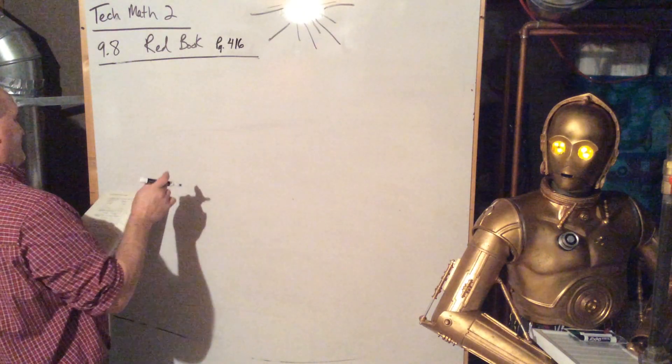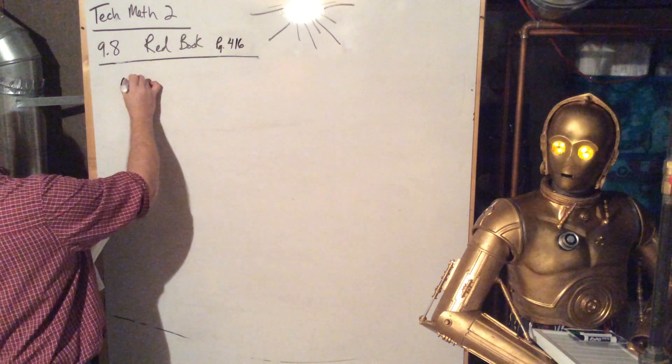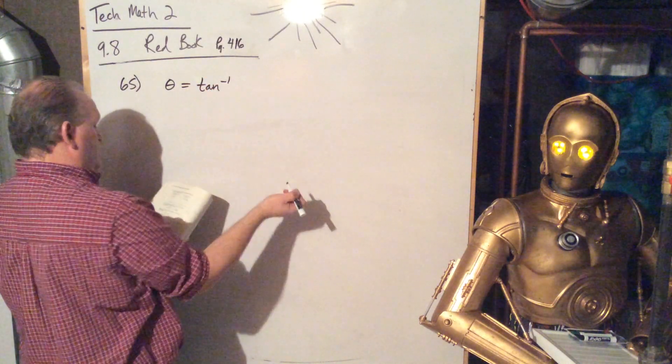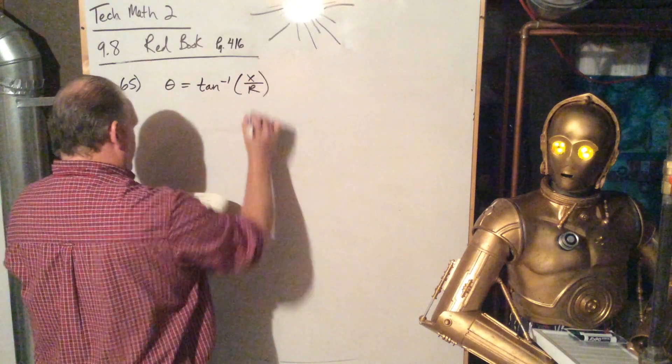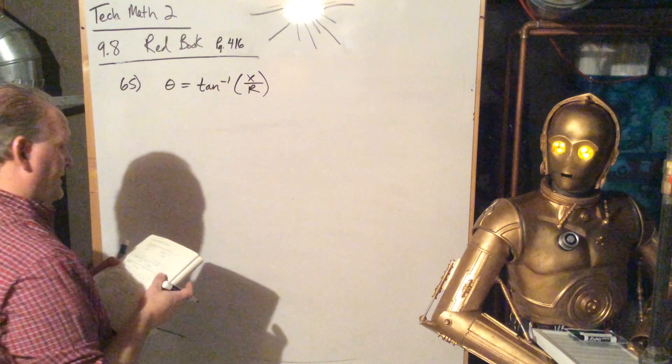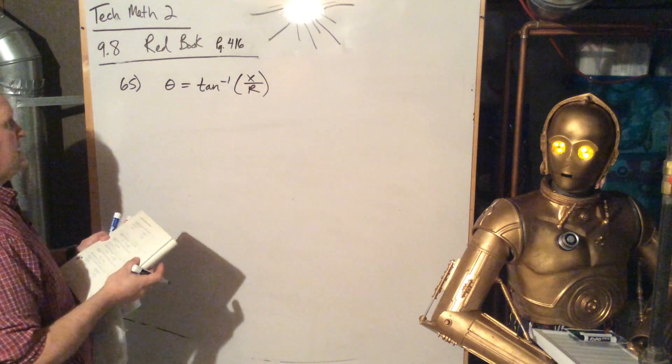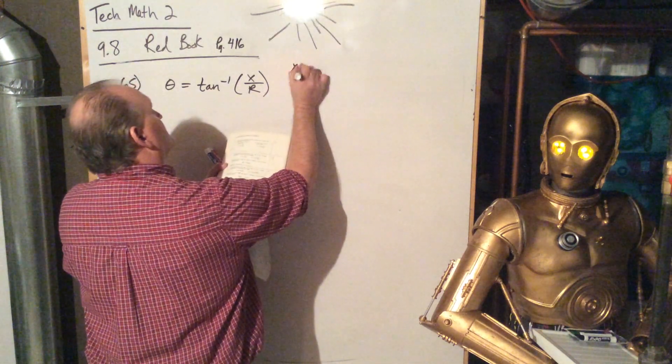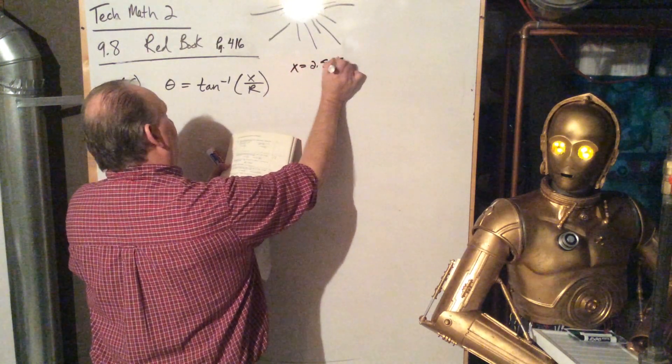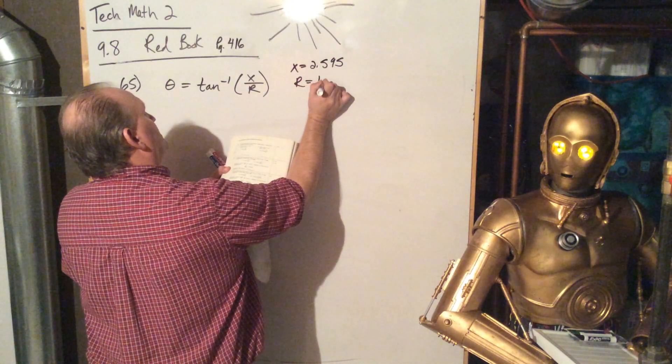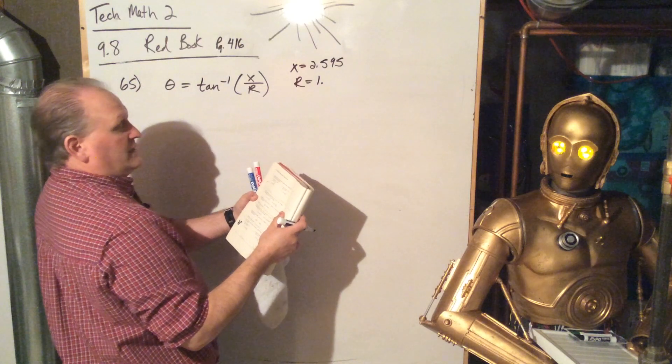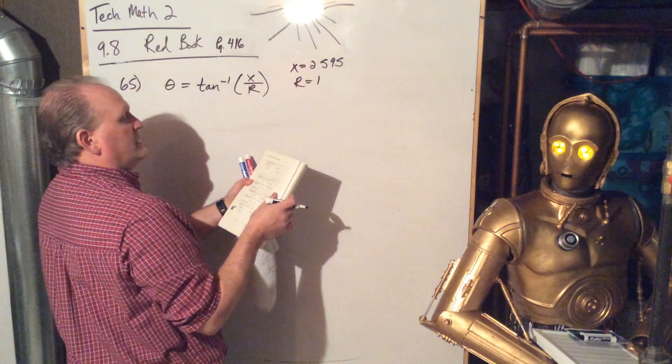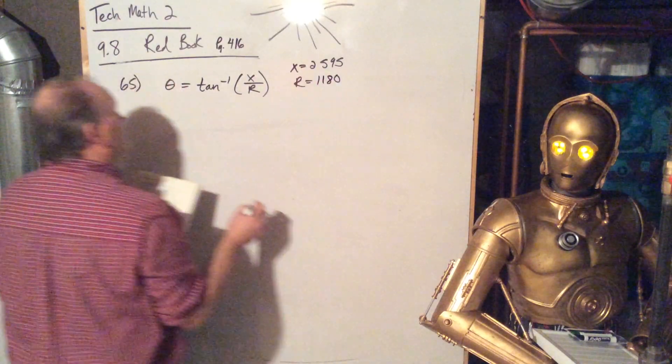All right, so we're looking at 4.16. Let's see, number 65. We've got theta is equal to tangent, arctangent, of x over r. And then we also have, so it says find theta when, oh, they just, it's just plug and chug. Okay, so this is just plug and chug. They just say, hey, x is equal to 2.595. r is equal to 1 point, is it 1 point or 1,000? Oh, neither one of those are decimal points. It's 2,595, and r is 1,180.